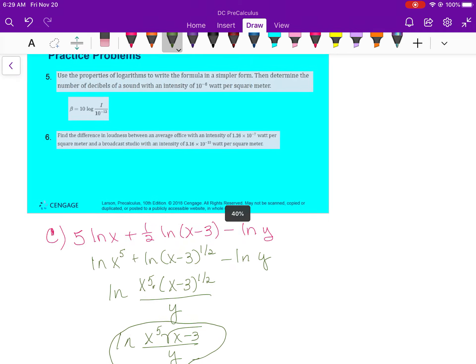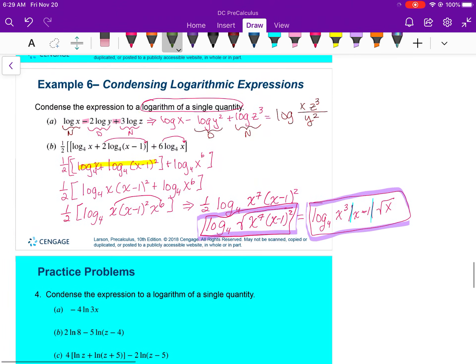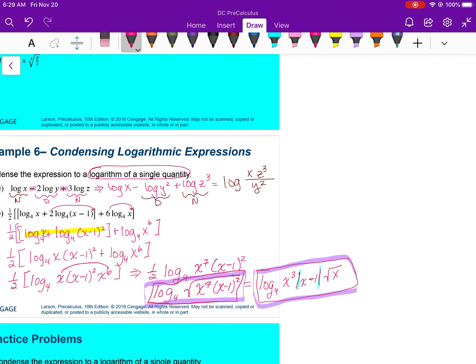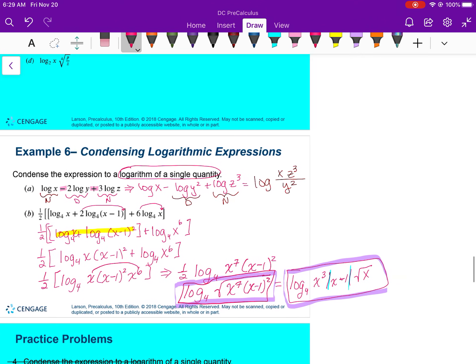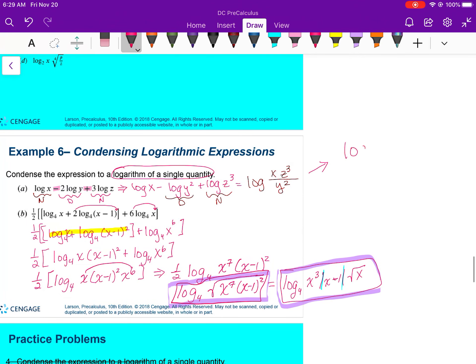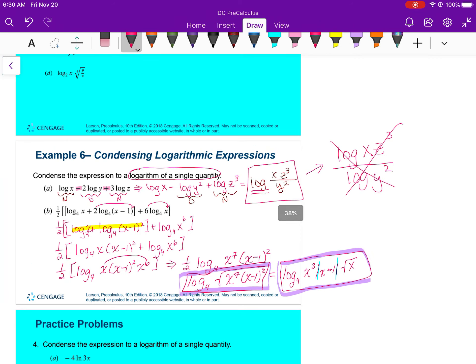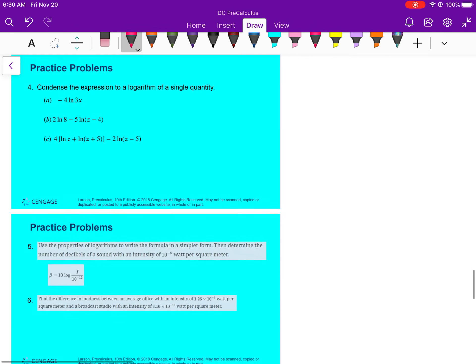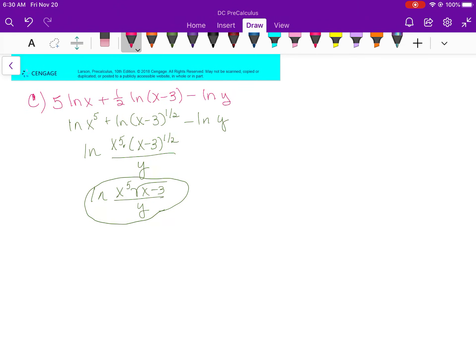All right, common mistake I should have mentioned: a common mistake, especially on a question like a, would be to write this right here. That's incorrect. You only get to write the log one time, so just make sure that you write the expression with a log of a single quantity, which means you get to use the word log one time. All right, that's the end of your notes. You guys have a great Thanksgiving break.